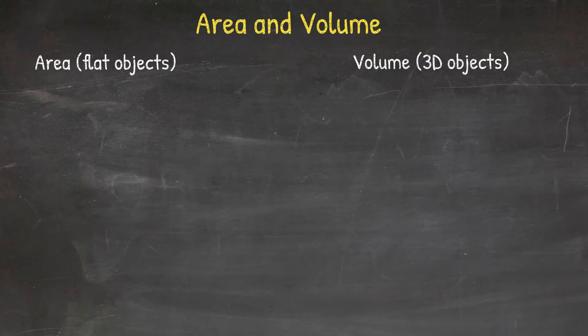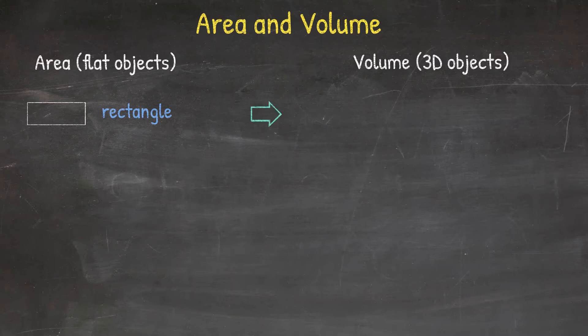Thinking of geometry, a flat object would be a rectangle, and a three-dimensional object would be a rectangular prism.